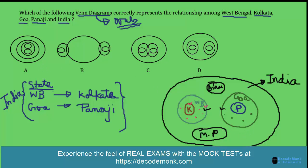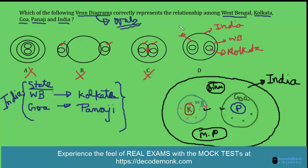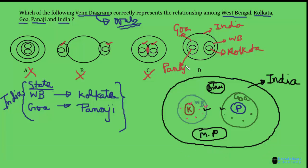We can check which of the options represents this relationship. Option A is not correct. Option B is also not correct — if the two circles represent the states West Bengal and Goa, then the capitals should be inside them, and West Bengal and Goa should not intersect. Option C is not right either. Here in option D, the large circle represents India, one circle inside represents West Bengal with Kolkata inside it, and another represents Goa with Panaji inside it. This Venn diagram represents the relationship correctly, so option D is the right answer.